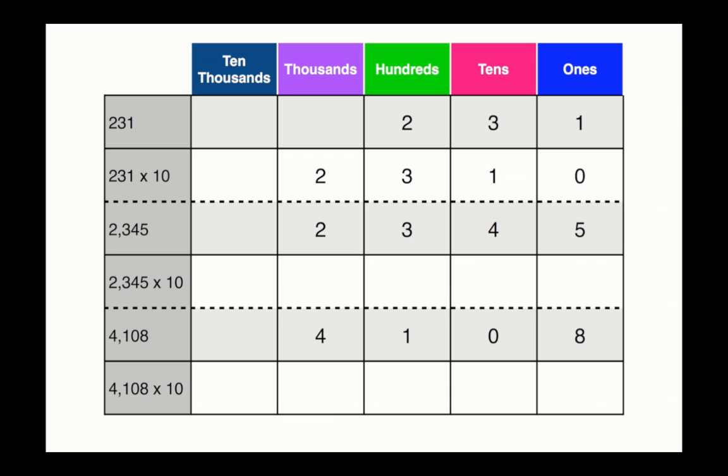2,345 times 10. How many zeros are in 10? One. Exactly. Put the 0 from the 10 in the ones column and move everything over by one. Your new solution is 23,450.